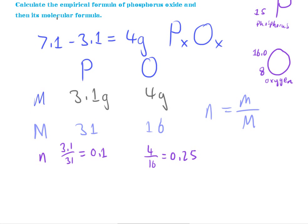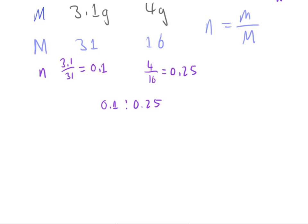And so, now we have the molar ratios. The molar ratio between phosphorus and oxygen is 0.1 to 0.25. And since these are not whole number ratios, we can't assign these as empirical formula subscript values. We need to multiply these up to being whole number values. So, the first thing I'm going to do is divide both of these values by the smallest number. And the smallest number here is 0.1. So, divide both of them by 0.1.